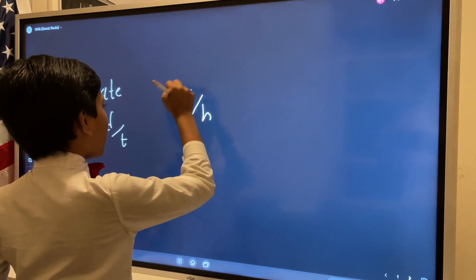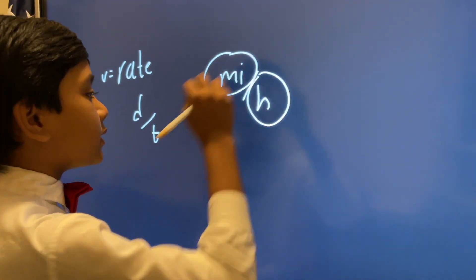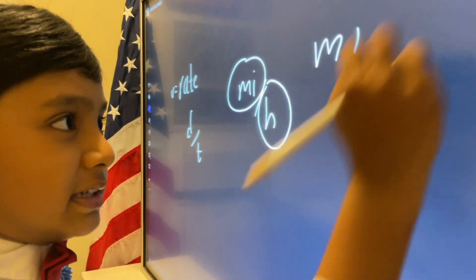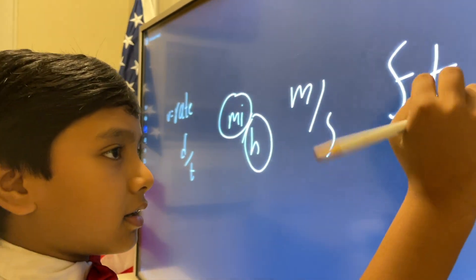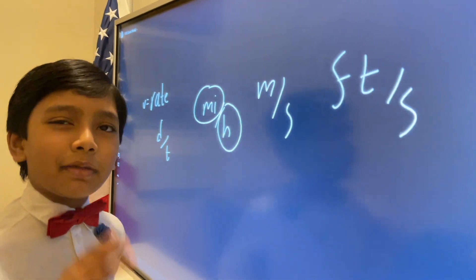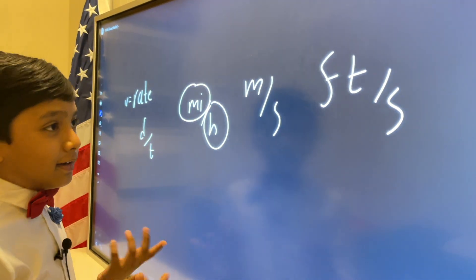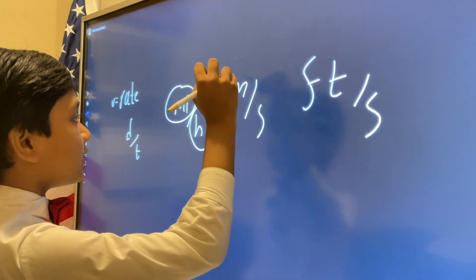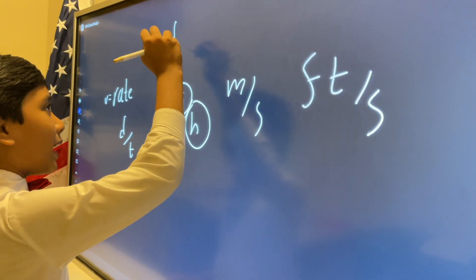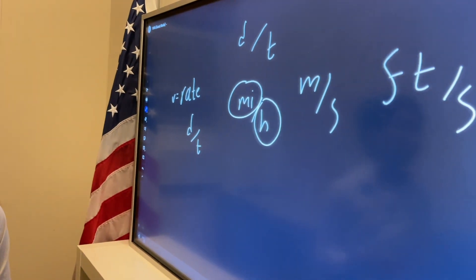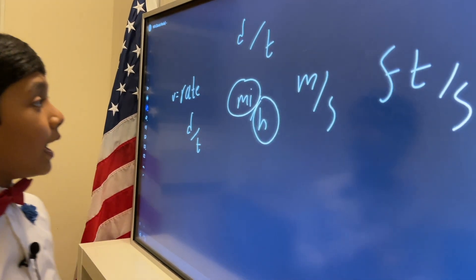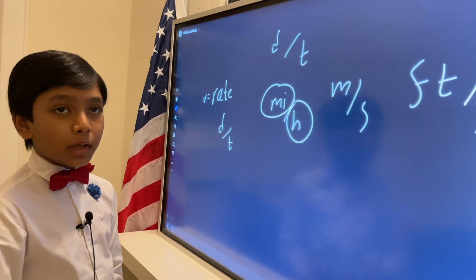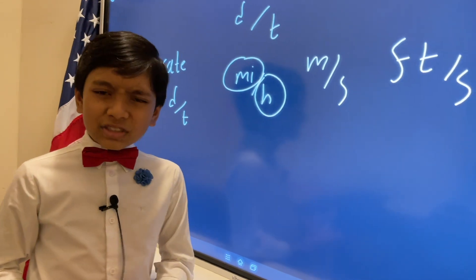You can understand that miles is for distance and hours is for time. Or meters per second, and for some reason feet per second. I don't know why most people don't use the metric system, hint hint America. But you can see the format: distance over time. So if you don't get the memo, now you do. Velocity is this coverage of distance over time. This is the measure of motion.